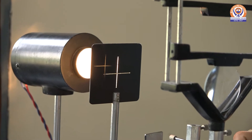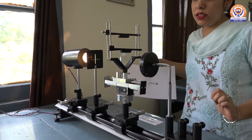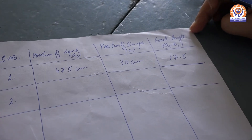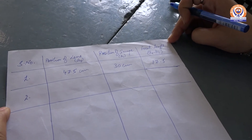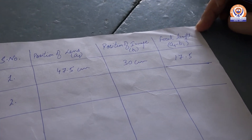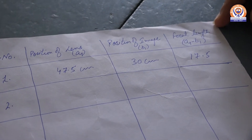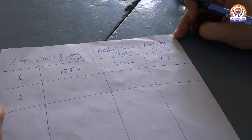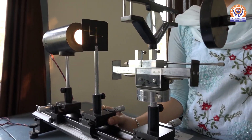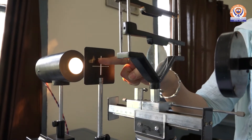Now we calculate the position of the image and the position of the convex lens. The first reading: the position of the image is 30 centimeters and the position of the lens is 47.5 centimeters. After subtraction, if A1 is the position of the lens and B1 is the position of the image, then A1 minus B1 gives the focal length. For the second reading, we change the position of the object and set the position of the lens so that a sharp image is formed.